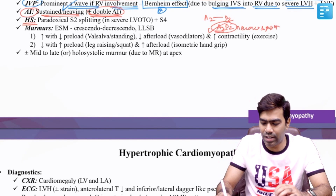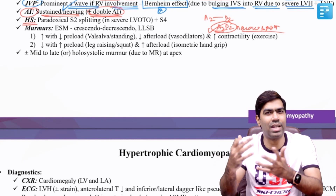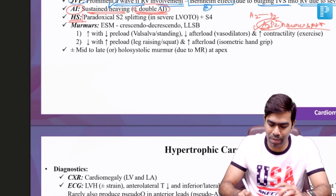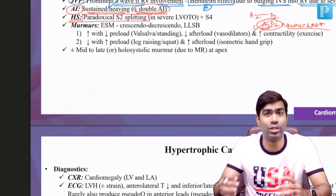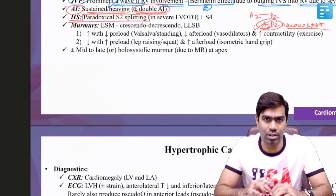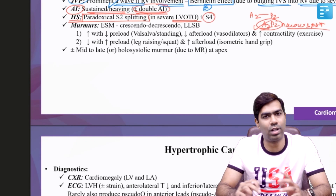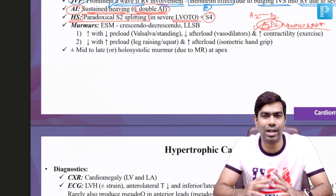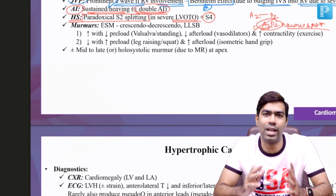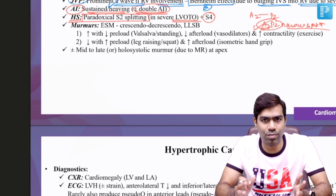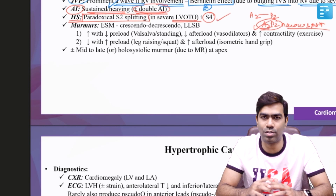In very severe cases, A2 can move beyond P2 due to sustained LV contraction, resulting in paradoxical or reverse splitting — a marker of severity in both HCM and aortic stenosis. This indicates severe LVOT obstruction. Many patients will also have a fourth heart sound, which is the classic sign of LV diastolic dysfunction — occurring when the atrium contracts against a stiff ventricle. S4 is very common in patients with HCM and aortic stenosis.